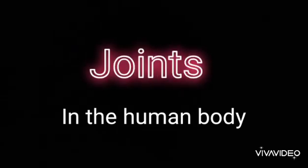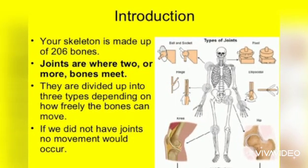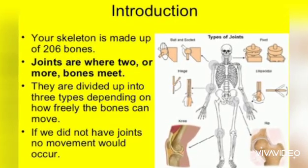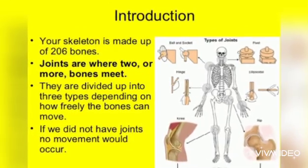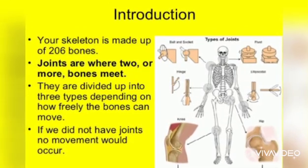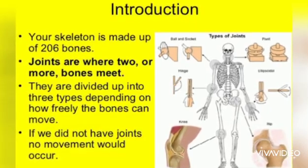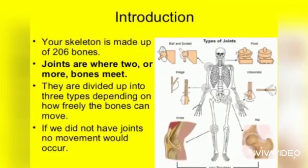Hello everyone. In this video we will study about the joints that are present in the human body. We all know that the total bones in a human body is 206, and joints are where two or more bones meet. They are divided up into three categories, and if we didn't have joints in our body, no movement would occur.